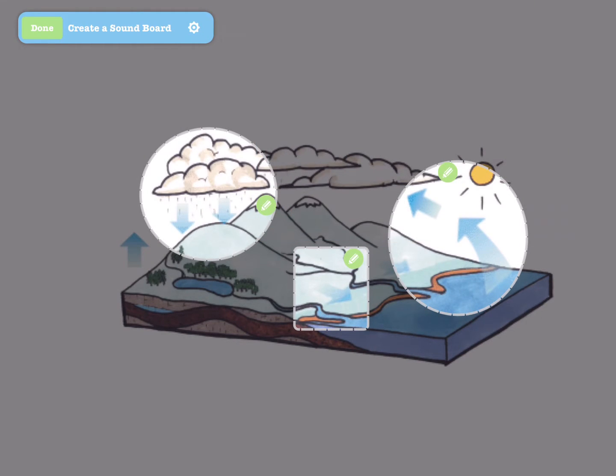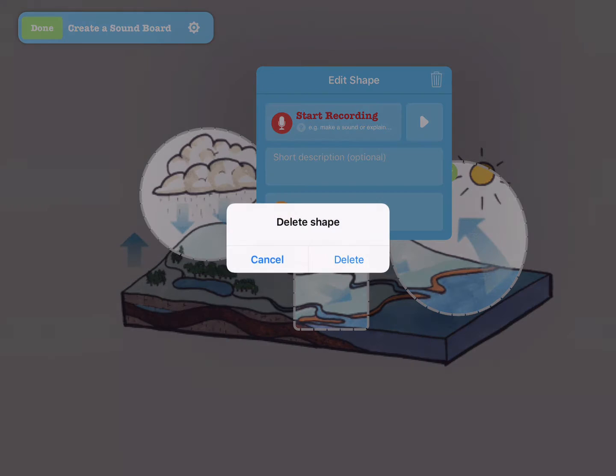If you don't like a hotspot on your soundboard, tap on the green pencil, and then on the trash can, to delete it.